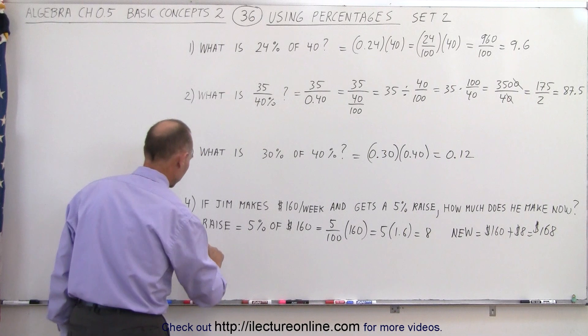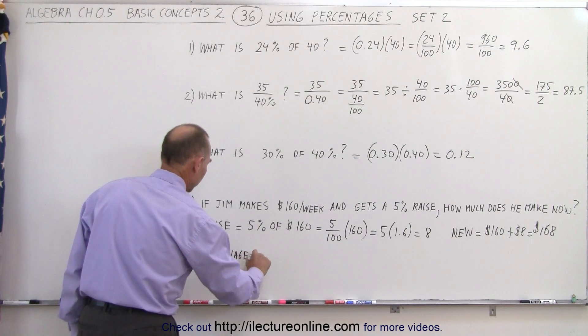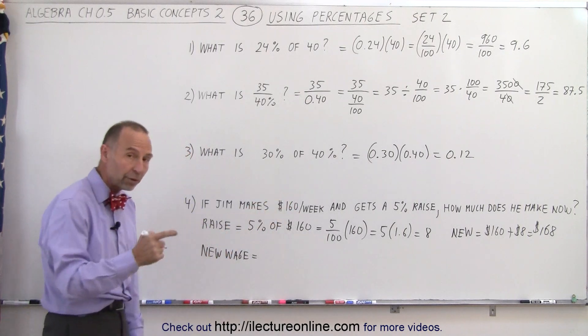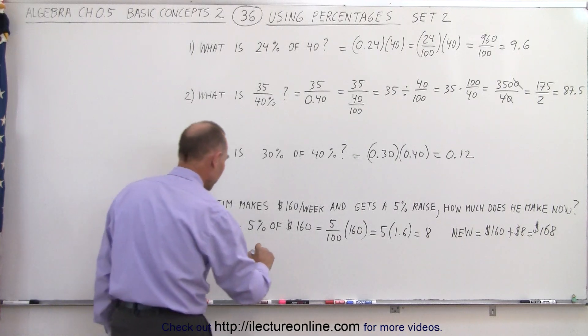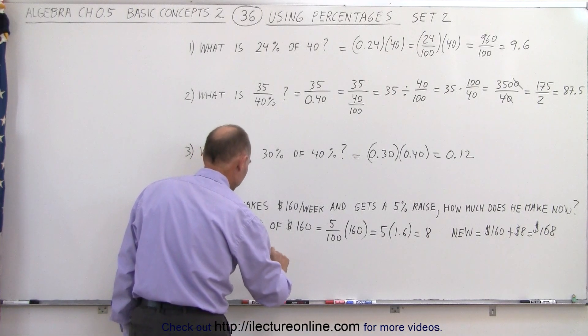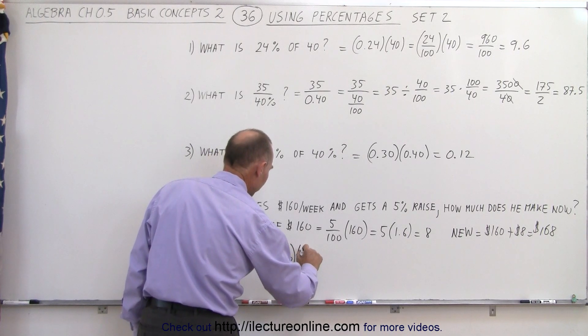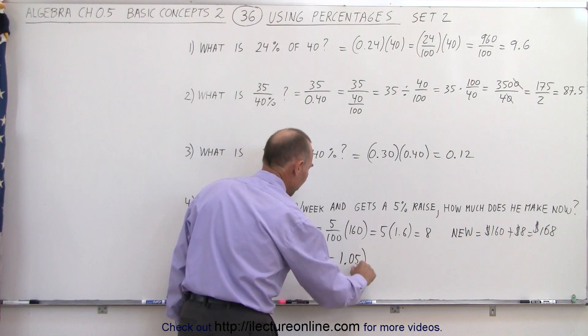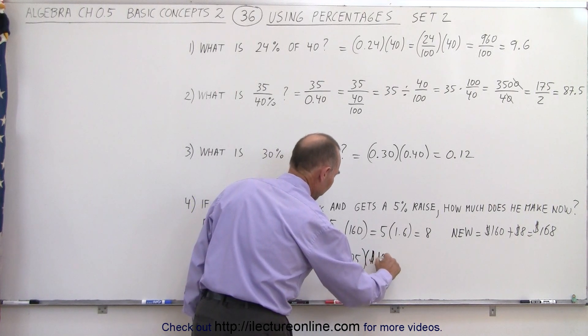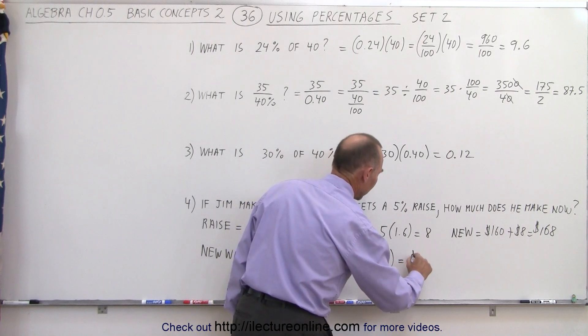Or what we could have said was the new wage is equal to 100% plus 5%. 100% was the original amount, plus 5% is now the total new amount. So the new wage equals 105% of the old wage multiplied times $160, which means 105% can be written as 1.05 multiplied times $160. And if we multiply this times this, we get $168.